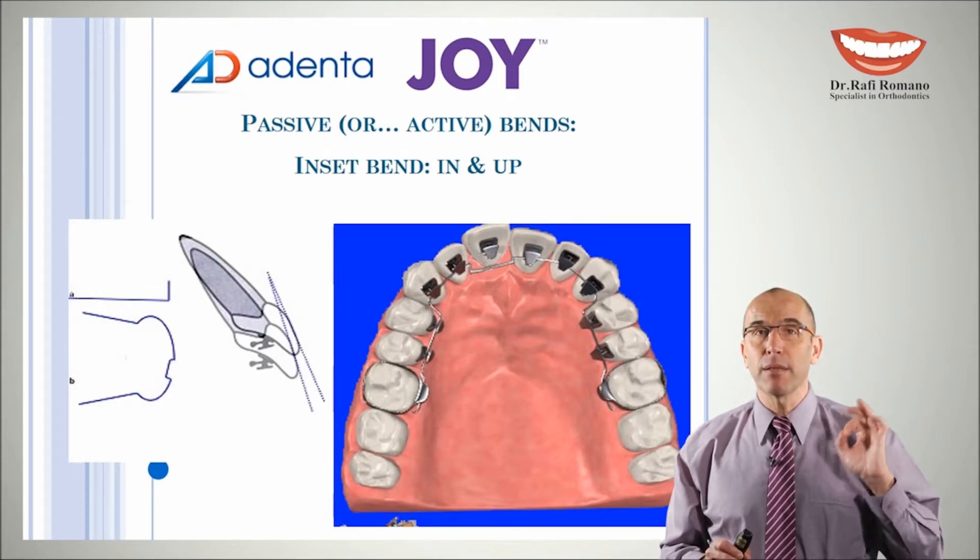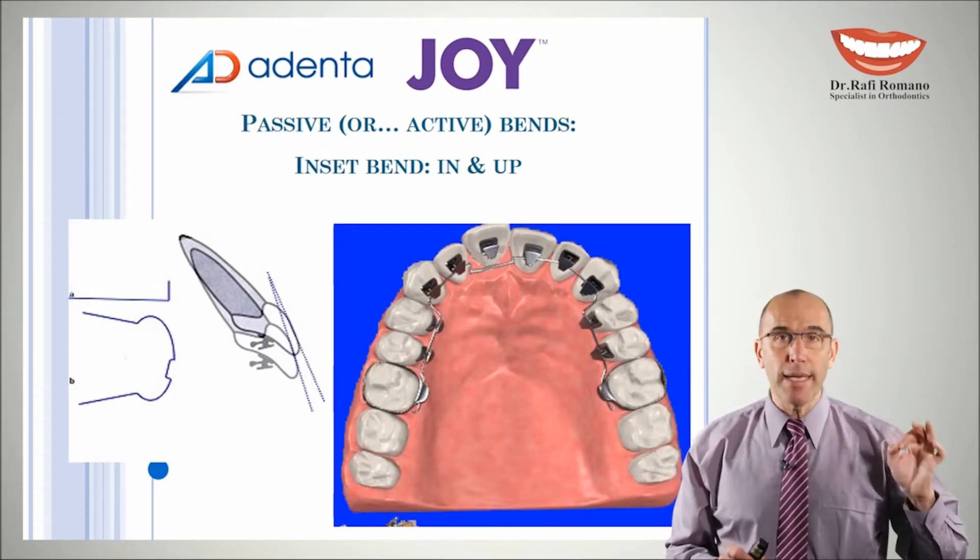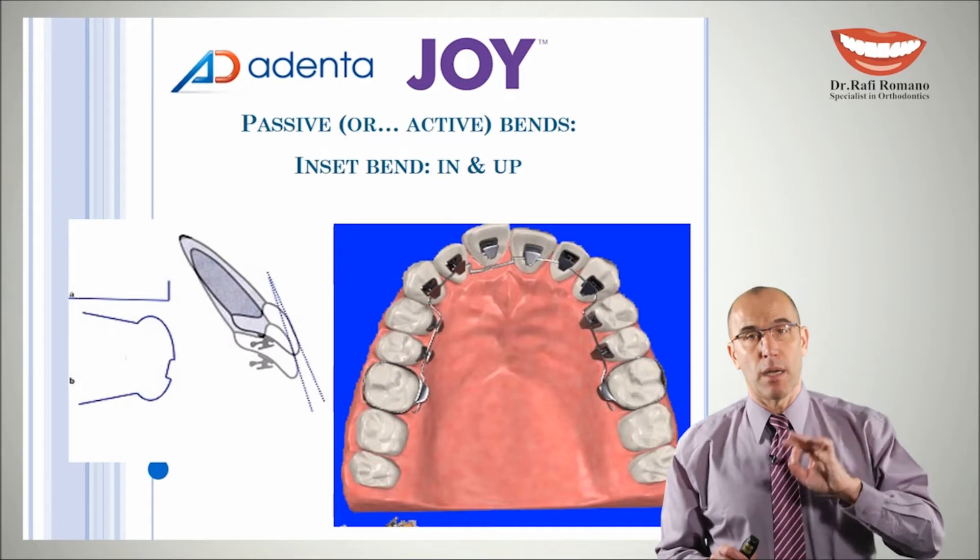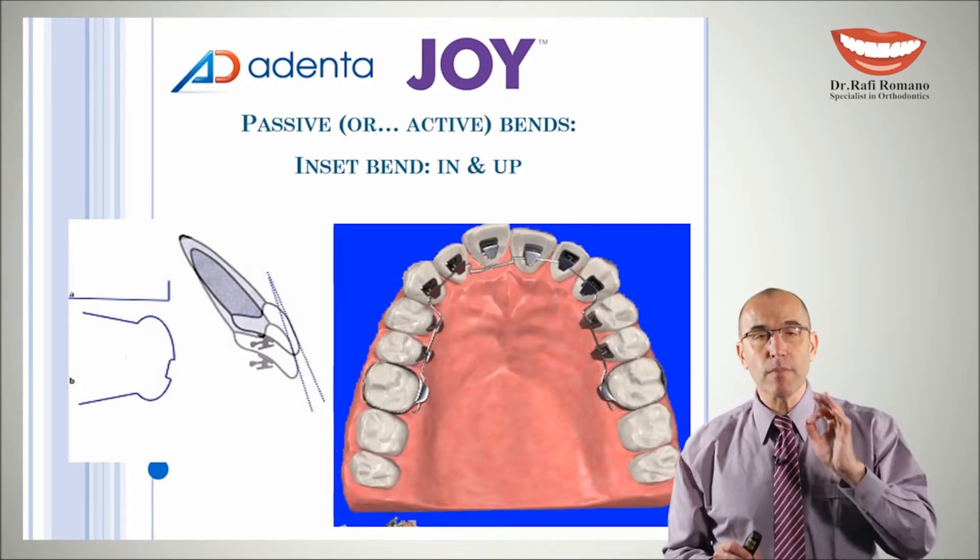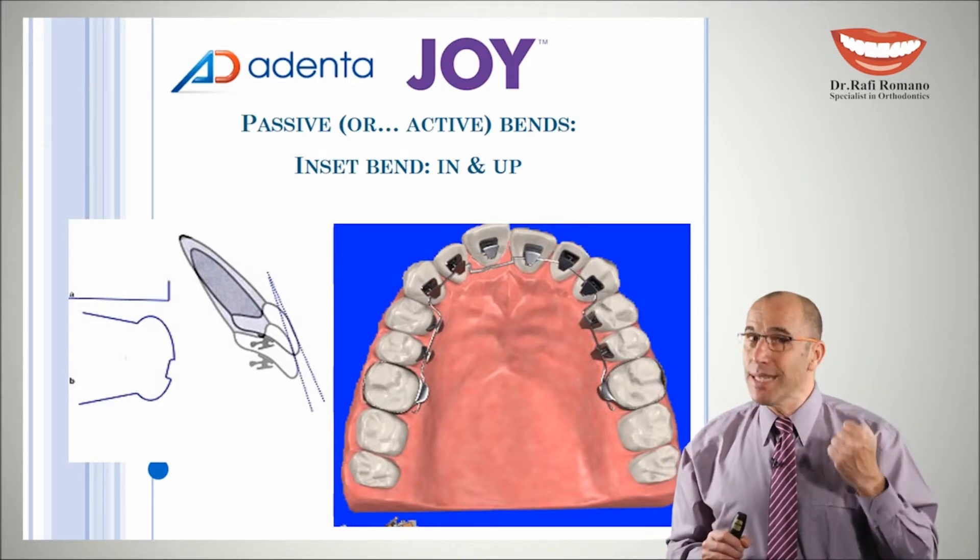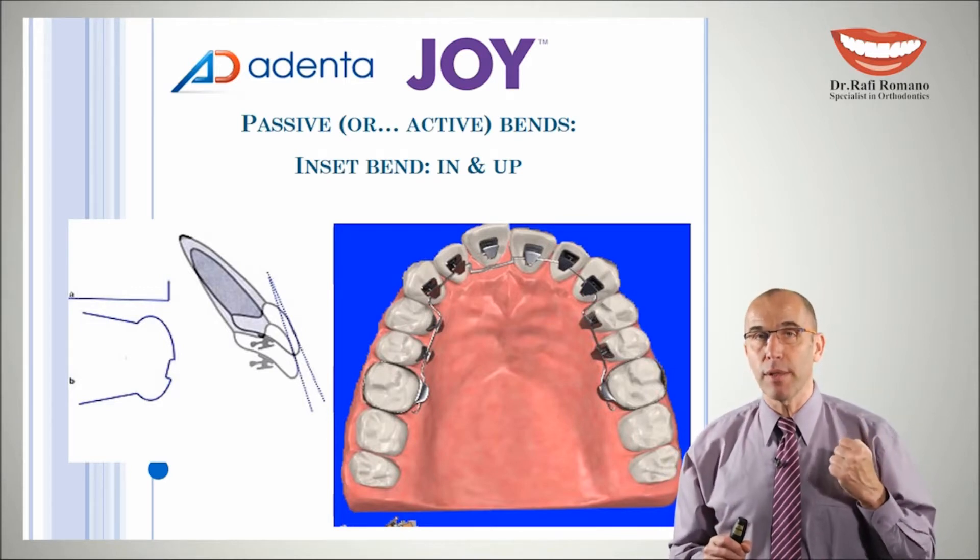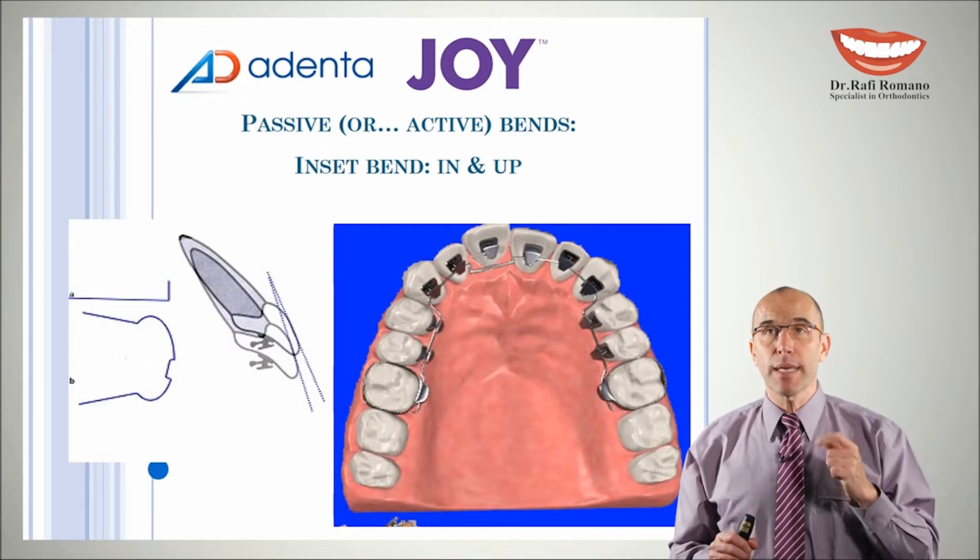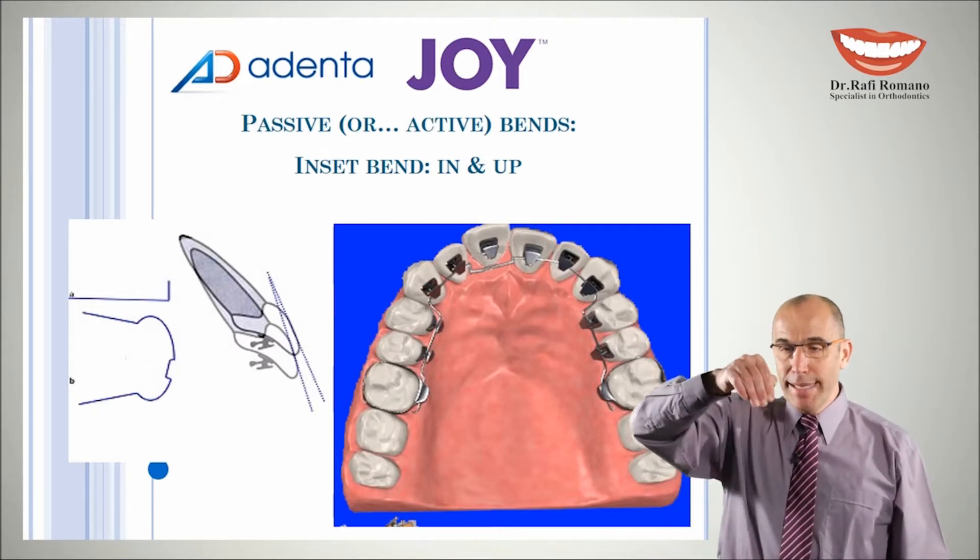These bends are usually made on round wires, 16-beta-titanium or CNA as called in the Adenta company, which is very easy to bend but still stiff enough to hold the teeth. So we will learn how to do an in-bend.